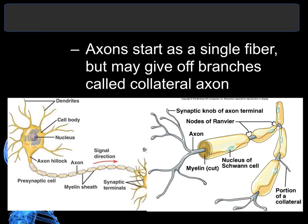Sometimes the axon can split, and when it splits into two, that is called the collateral axon.